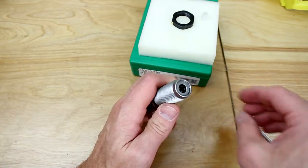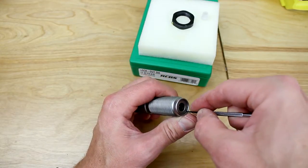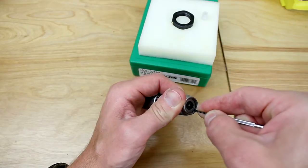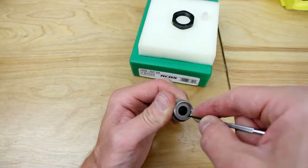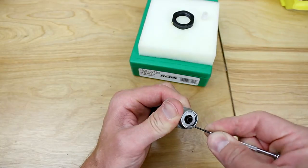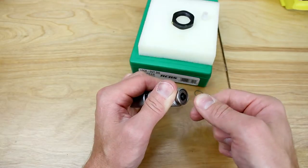Now we need to take a small screwdriver or other such tool and very carefully get under the circlip there and we are just going to pry that out and of course retain this so that it doesn't go flying.